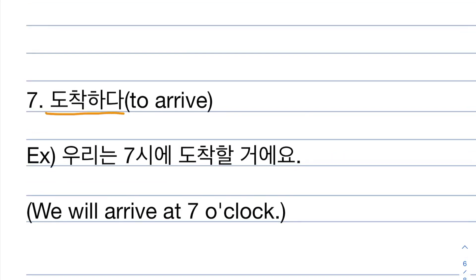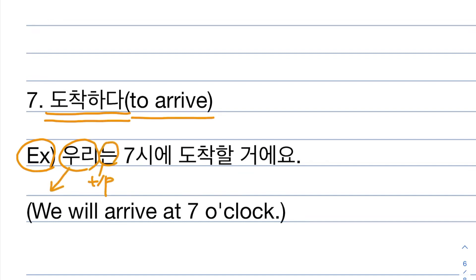Number seven. 도착하다 means to arrive. Example: 우리는 일곱시에 도착할 거예요. 우리 is 'we', 는 is topic particle, 일곱시 is 'seven o'clock', and 에 is 'at'. 도착할 거예요 means will arrive. So 우리는 일곱시에 도착할 거예요 means 'we will arrive at seven o'clock.'